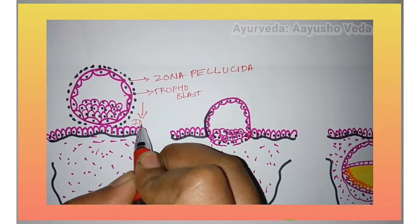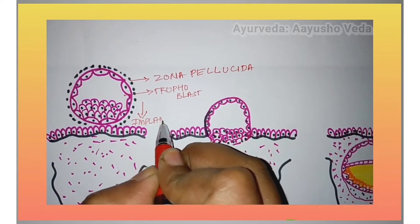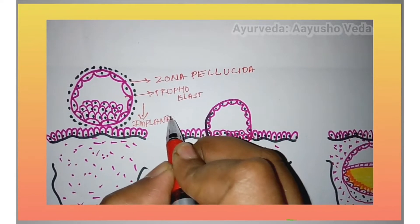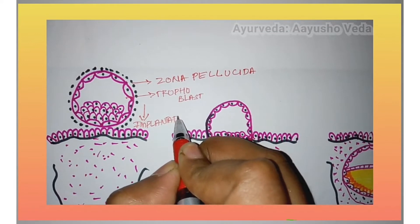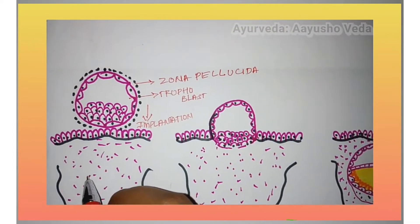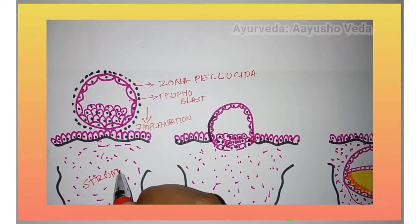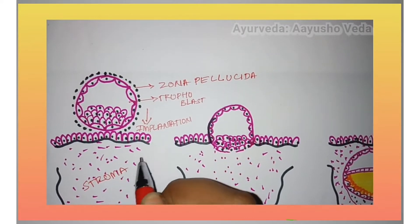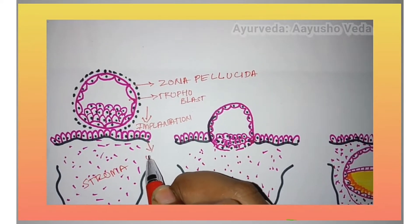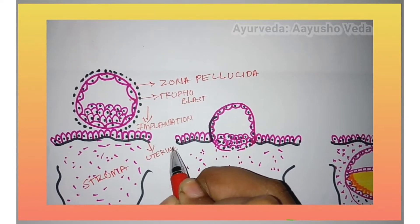The attachment of the trophoblastic cells to the endometrium is called implantation. So the process of attachment of the blastocyst to the uterine wall is implantation. This is the stroma of the uterus and this is the endometrial epithelium.